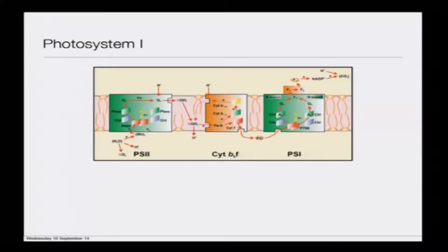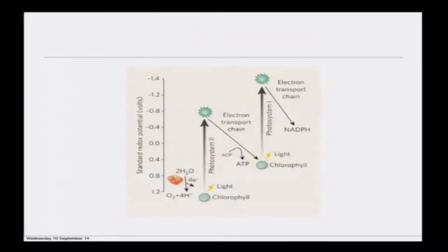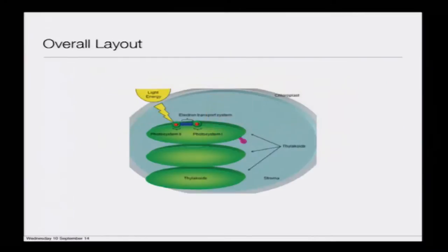From Photosystem 1, the electron from P700 goes through another series of proteins — Fx, Qx — and eventually goes to NADPH reductase. This is how the whole assembly of Photosystem 2, cytochrome b6f complex, and PS1 is arranged on the thylakoid membrane, separating the stroma and the thylakoid lumen. The overall layout of the system is now clear.